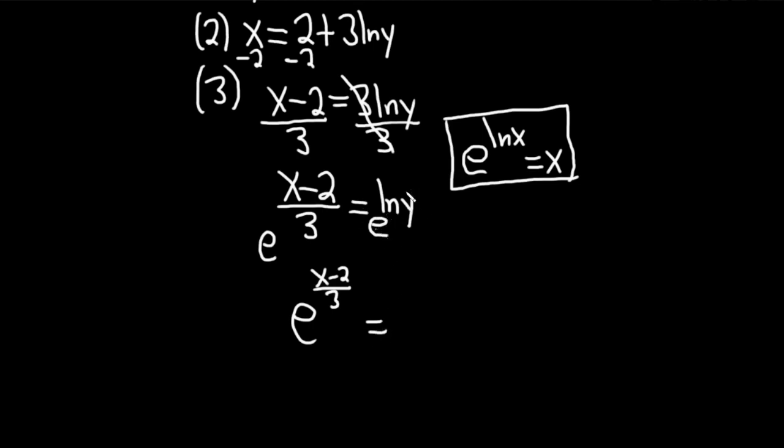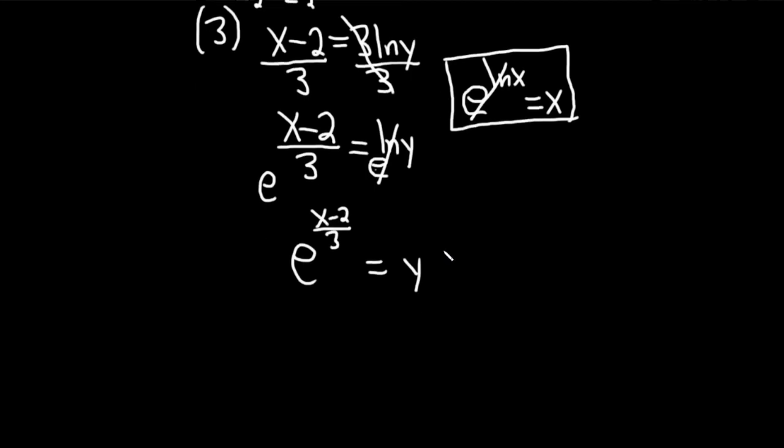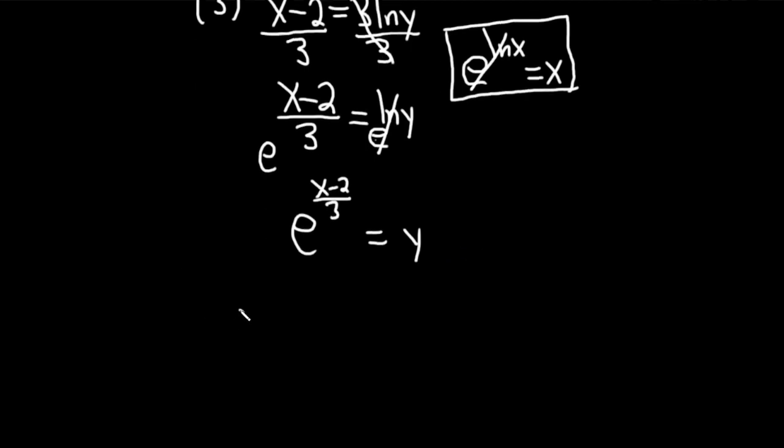But from our formula, this is just y. Because it's just like x. These basically cancel and you just get y, right? They cancel and you just get x. And let's go ahead and write the y on the left-hand side. So this is y equals e to the x minus 2 over 3.